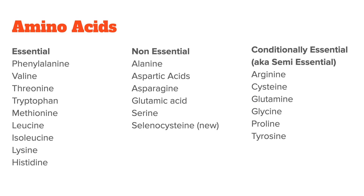Here's a list of the 21 amino acids that are commonly found in our diet and in our bodies. Just as a side note, selenocysteine is a more recently discovered amino acid, so some old textbooks will not note it and will say that there are only 20 total amino acids found in our diet.